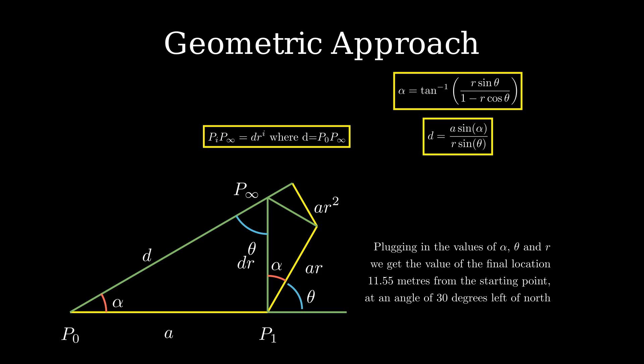This concludes the geometric approach. Let's move on to the complex number approach. Let the position of Nikhil at the nth step be P(N) and the displacement at the nth step be D(N). The initial position in the Argand plane will be 0.